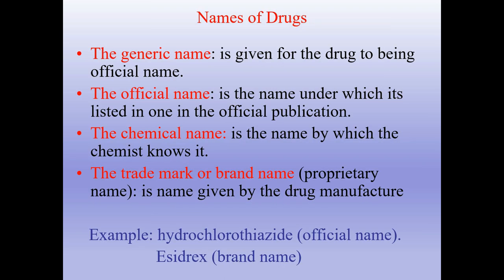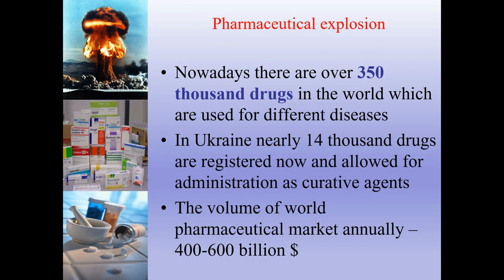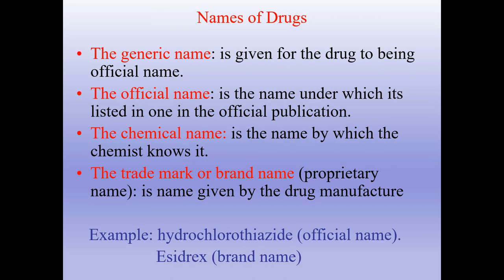About names of drugs — from all those approximately 350,000 drugs in the world, it's important to understand the difference between drug names and international names. The generic name is the official name under which the drug is listed in official publications. The chemical name is the name by which the chemist knows it. The trademark or brand name is the name given by the drug manufacturer. For example, hydrochlorothiazide is the official name, while Azidrex is its brand name.